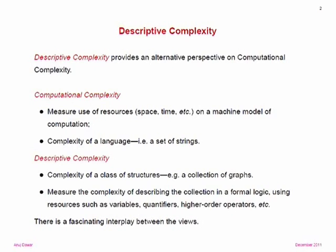This is in some sense a very natural step. When we talk about the complexity of deciding whether a graph is Hamiltonian, we really want to think of the input as a graph rather than a string encoding a graph. The fact of encoding structures as strings, which we have to do in computational complexity, does introduce a slight mismatch which is going to be the focus of some of what I'm going to say. These two different views of complexity are linked but also different, and the interesting work is all in the tension between them.